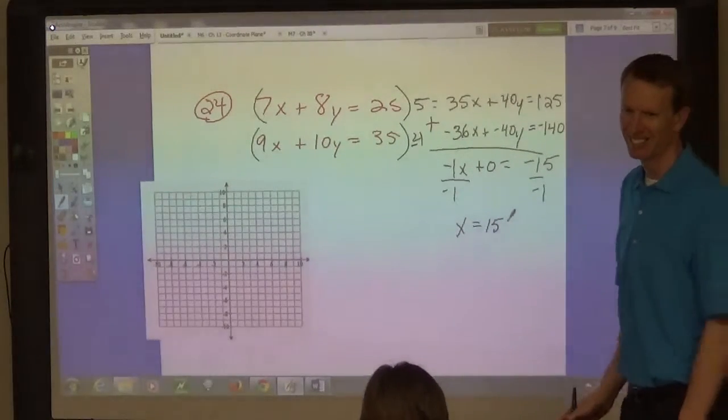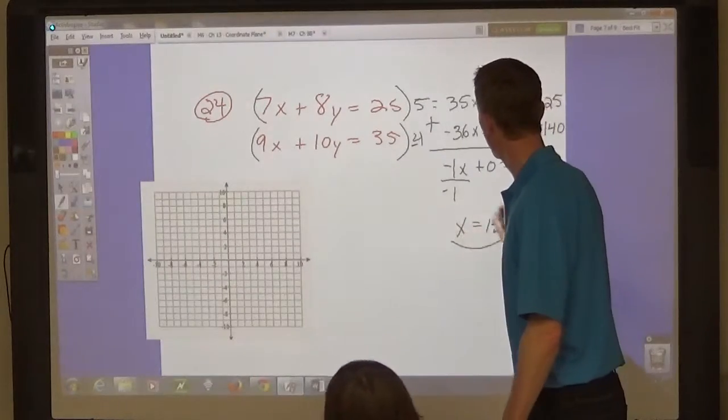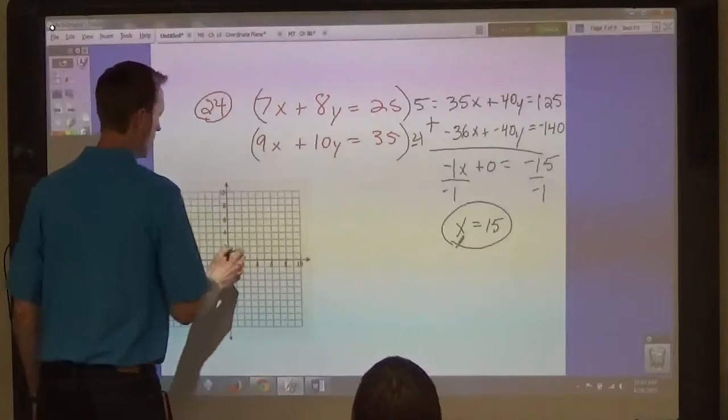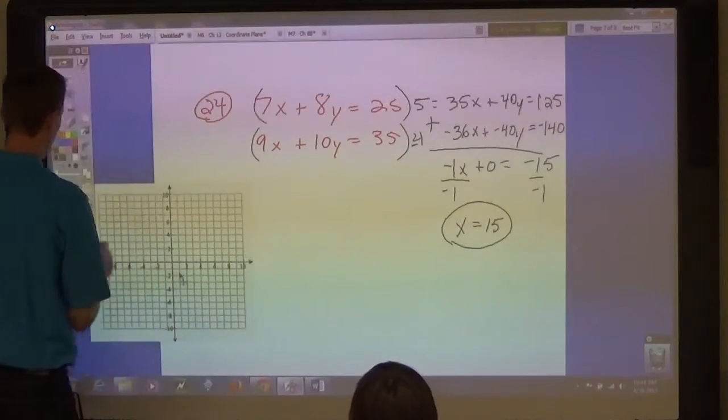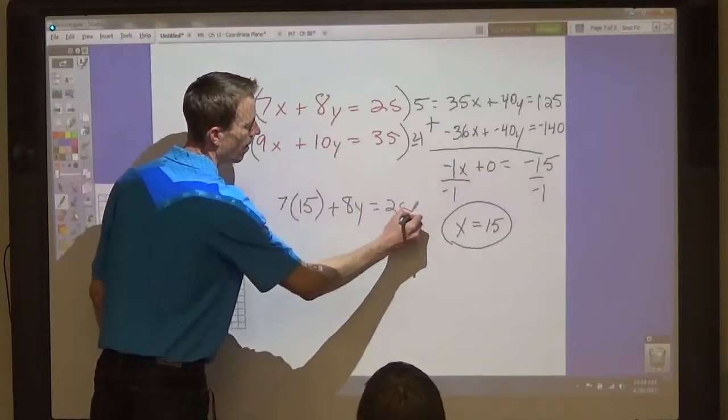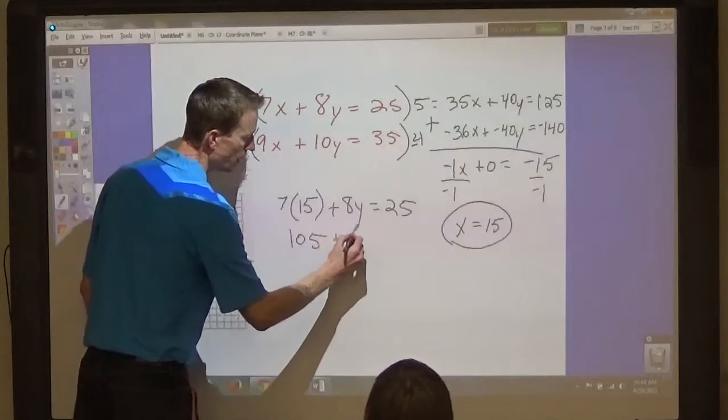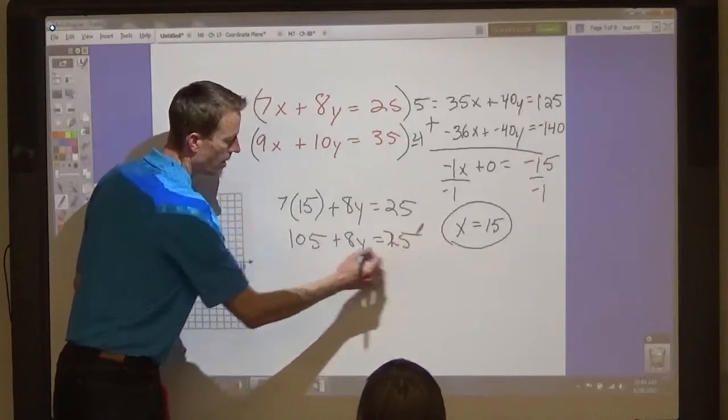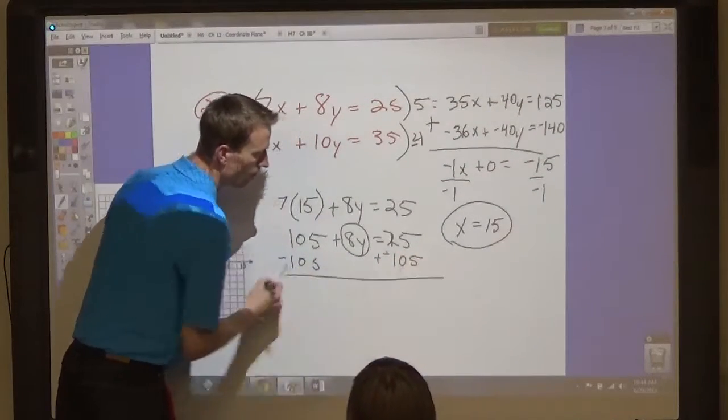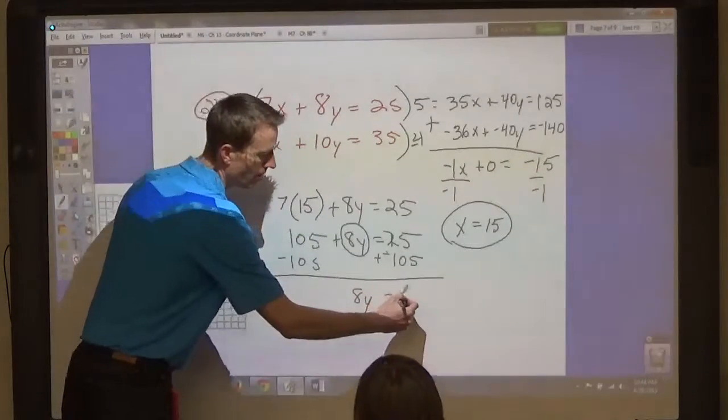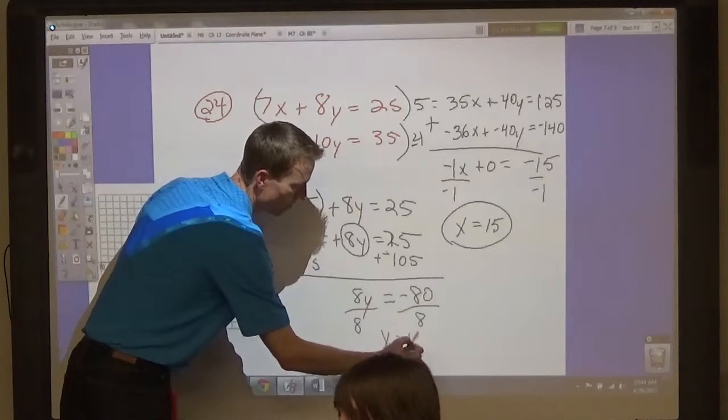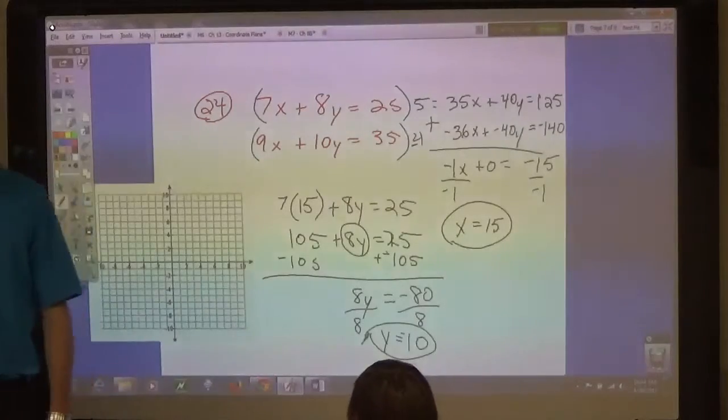X equals 15. And then, if x is 15, let's plug that into the original. So 7 in parentheses 15 plus 8y equals 25. So 7 times 15 plus 8y equals 25. So 105 plus 8y equals 25. Then solve for y. So minus 105 minus 105. 8y equals negative 80. So divide by 8 and you get... So 15, negative 1.